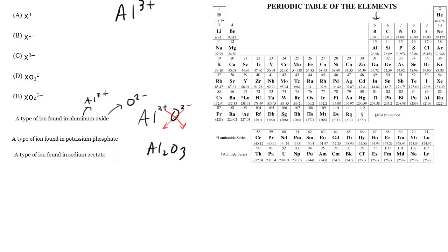But the problem just wants to know what type of ion is found. So what type of ion? Well we've got a metal three plus and a non-metal two minus. So the only choice that fits that is choice C.